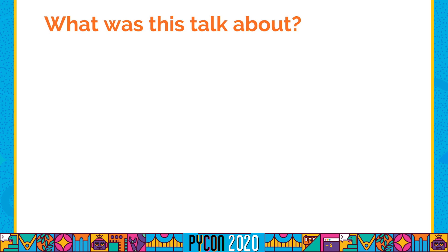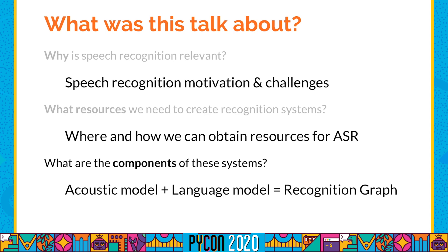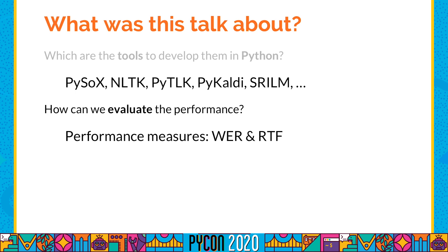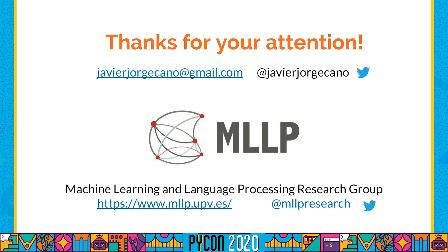To summarize, we have covered: speech recognition motivation and challenges; where and how to obtain resources for ASR systems; the components of an ASR system — the acoustic model and the language model — and how they are combined to create the recognition graph; tools in Python to develop ASR systems; performance measures including word error rate and real-time factor; and briefly, advanced directions such as neural network-based approaches and integrated models. Thank you for your attention. Please feel free to contact me or my research group if you want to know more about our tools, systems, or research.